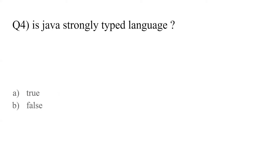Is Java a strongly typed language — true or false? Whenever we assign the data type to a variable, we say that the language is strongly typed. In JavaScript, we directly write the variable name and assign it the value, letting the compiler decide the data type. In Java, we always write the data type when we define a variable — for example, int a = 5, boolean b = true. So whenever we specify the data type, we say it is a strongly typed language. The answer is true.